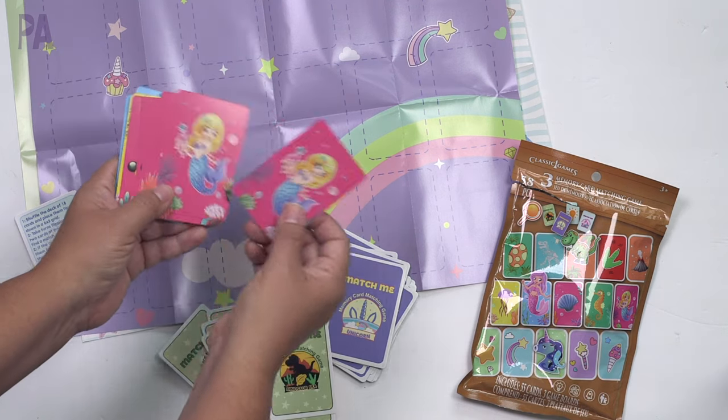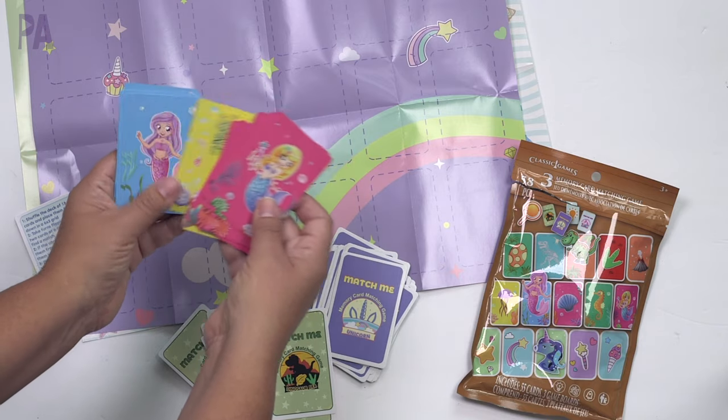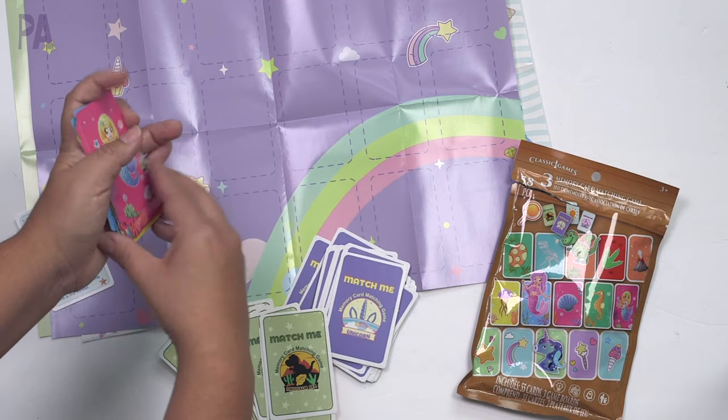So here's the mermaid set. We got mermaids, seahorses, clam and oyster, fish, jellyfish, another mermaid, another mermaid, starfish, and a shell.